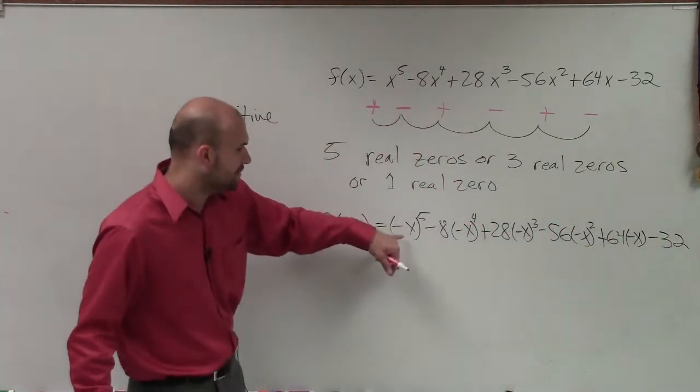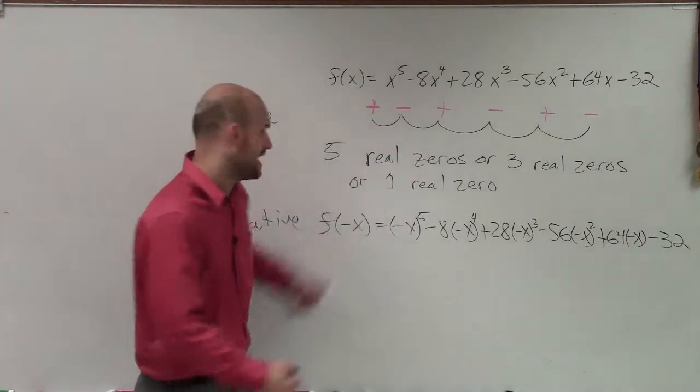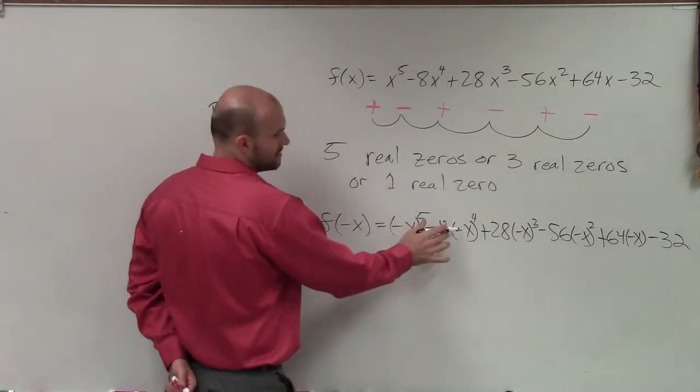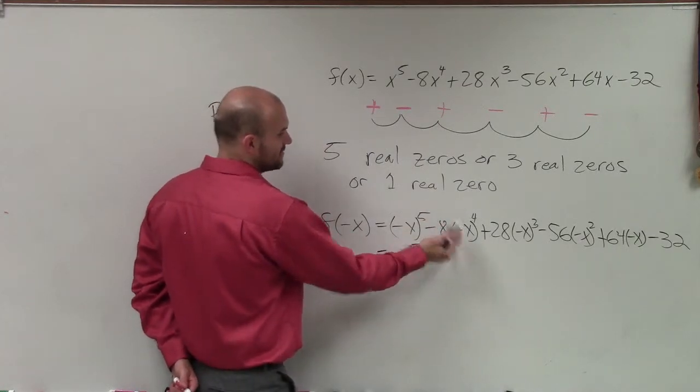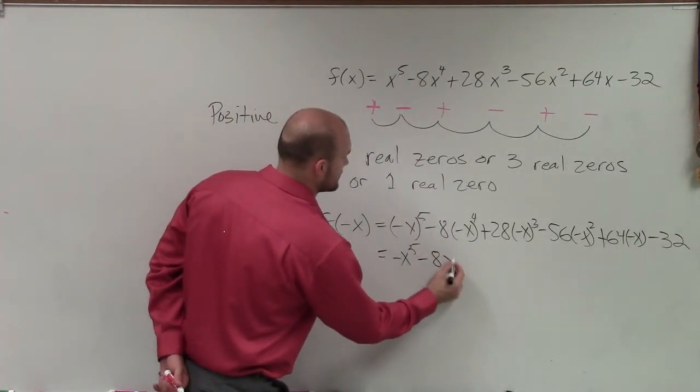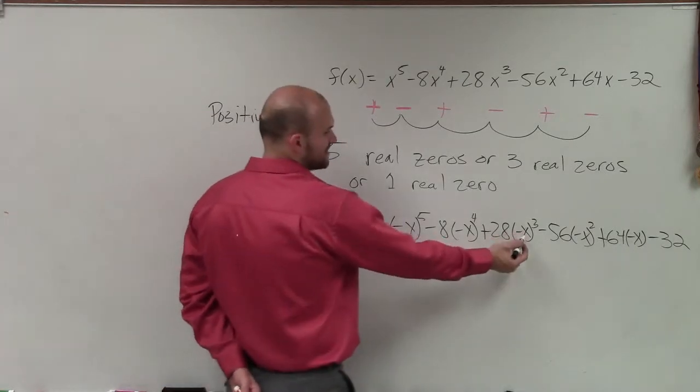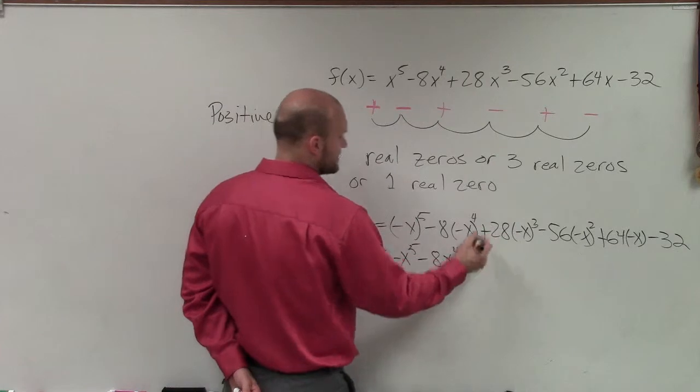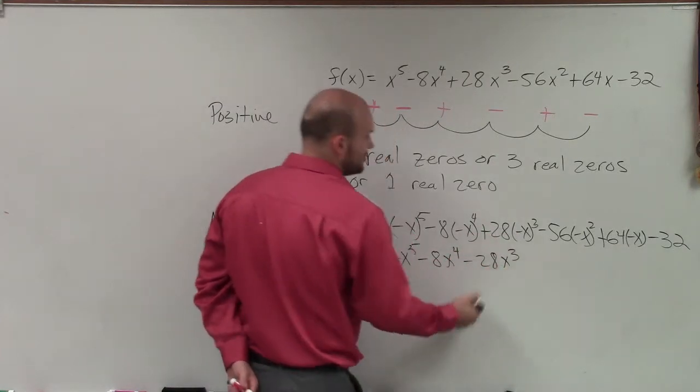All right? So therefore, negative x, since it's raised to an odd power, that's going to become a negative x to the fifth. Negative x to the even power will make it positive times a negative will now be 8x to the fourth. This is negative x to the odd power will be negative, and then times 28. So that's a negative 28x cubed.